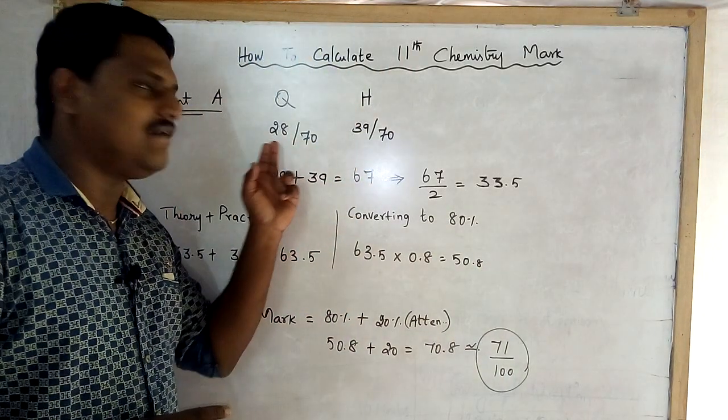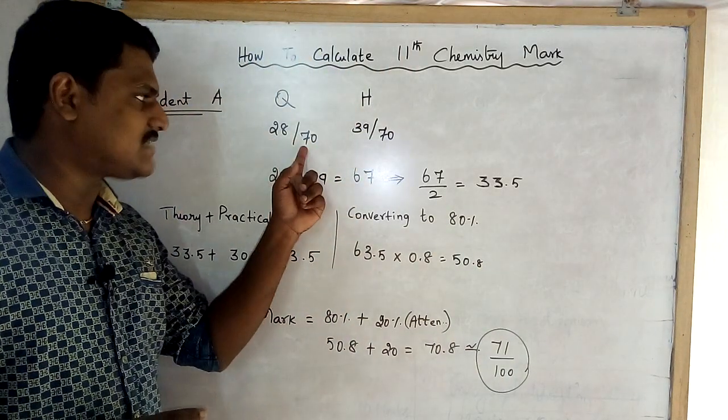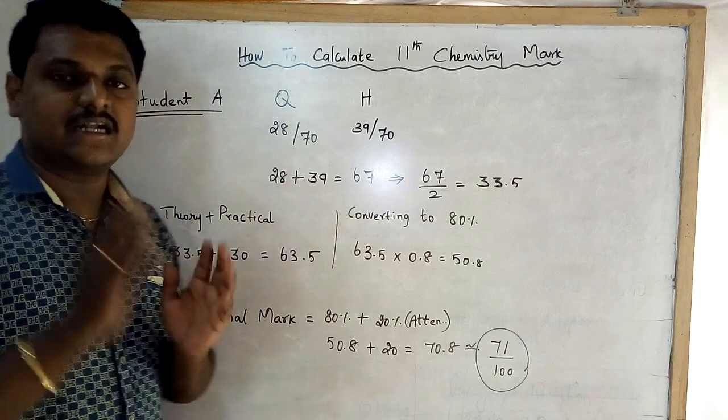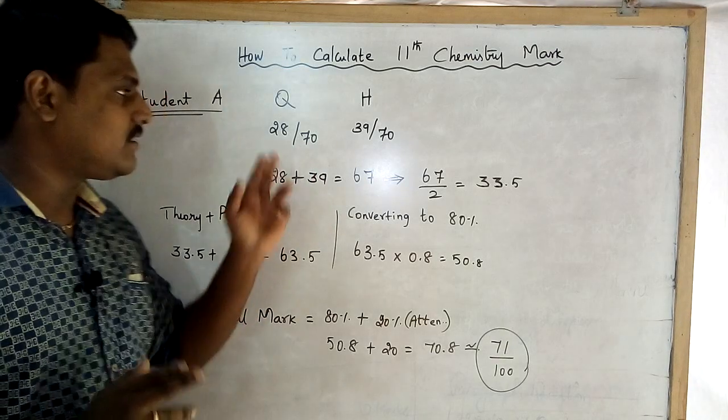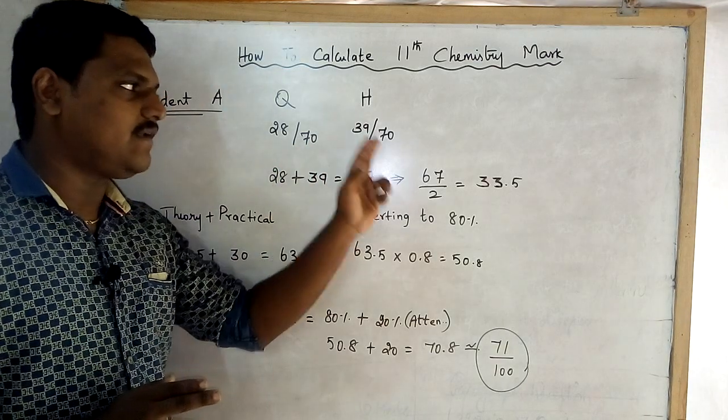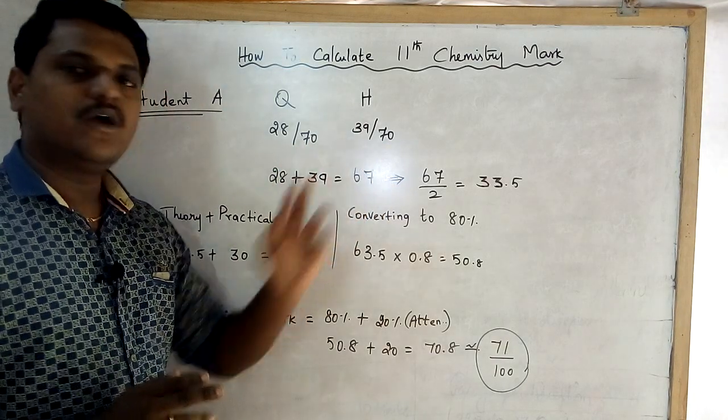Quarterly mark is 78 — that is 70 out of 70 converted to 28. Half-yearly is 80 out of 30, and the quarterly theory is converted to 28.